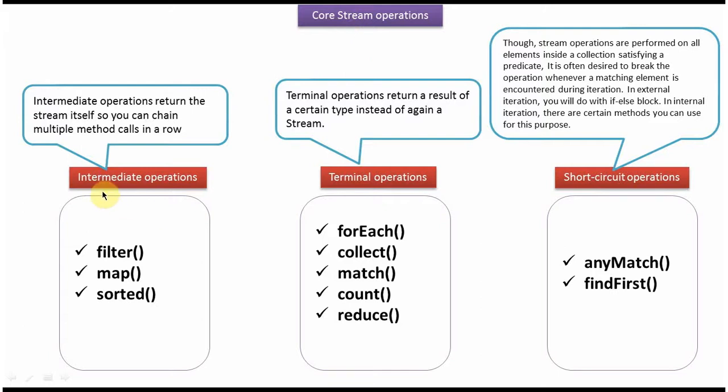The first one is intermediate operation. Examples of intermediate operations are filter, map, and sorted. Intermediate operations return the stream itself, so we can chain multiple method calls in a row.